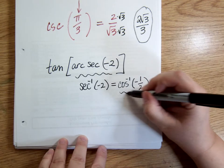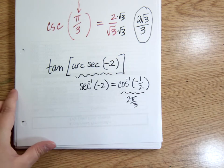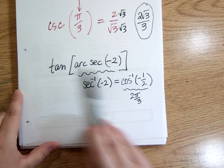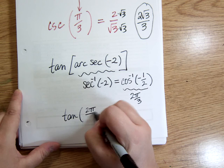So this whole thing becomes 2 pi over 3. So all of that was just simplifying inside the brackets, so now the whole problem becomes tan 2 pi over 3.